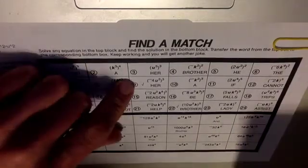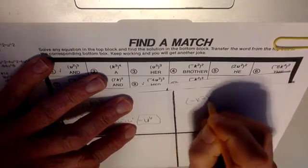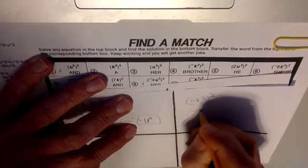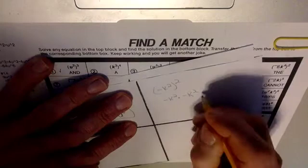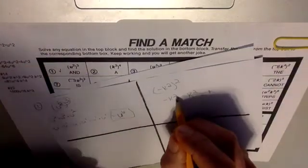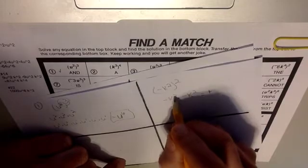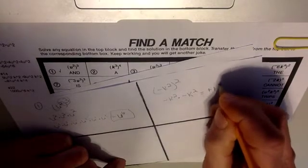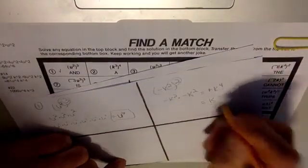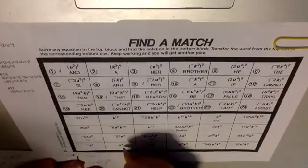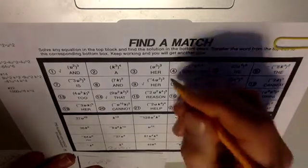Number two and three are very much like that. Number four, you've got negative k squared, all squared. So you've got negative k squared times negative k squared. A negative times a negative gives us a positive. And multiplying powers of the same base, you add the exponents: two plus two is four. So it's k to the fourth power. Two times two is four — k to the fourth power. K to the fourth power is down here, so that is going to be 'brother.'